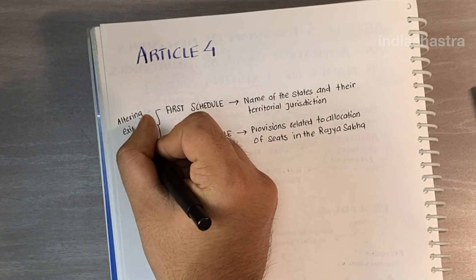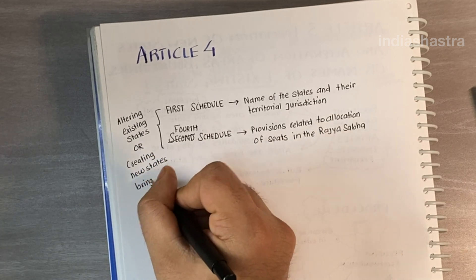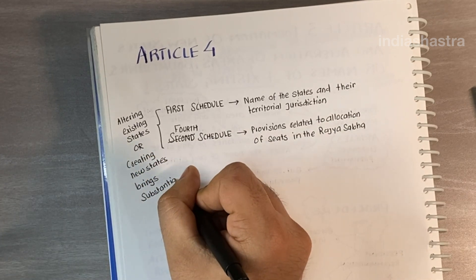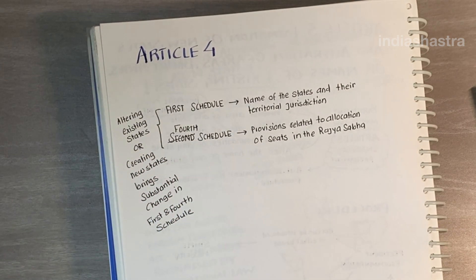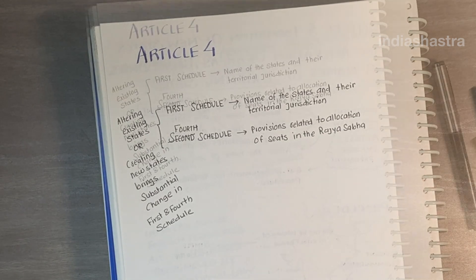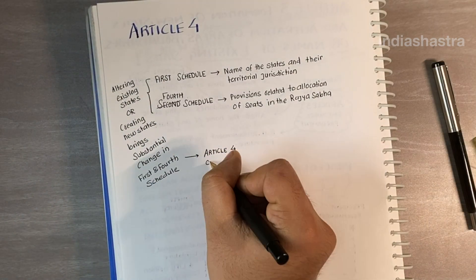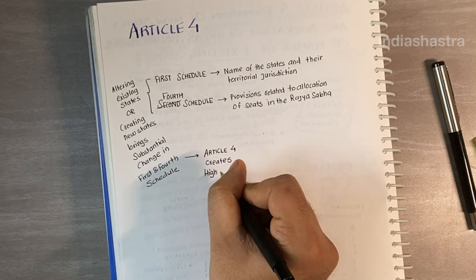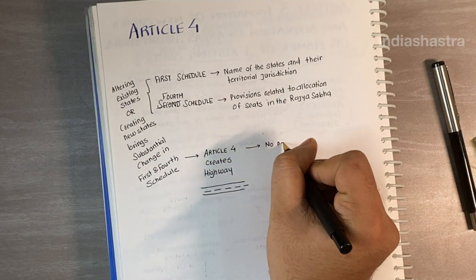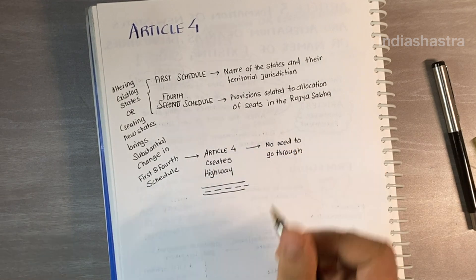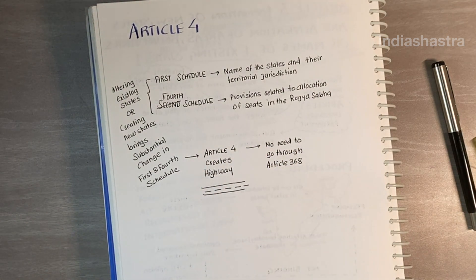So now, what is the role of Article 4 in all these? Article 4 allows for such substantial changes in the First and Fourth Schedules without going through the special formality of a constitutional amendment prescribed in Article 368. In other words, Article 4 allows bypassing Article 368.